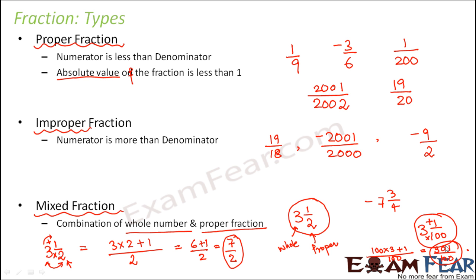Why can a mixed fraction only be expressed as an improper fraction? In a mixed fraction, one part is already a proper fraction. But the moment you multiply it with a whole number, the overall value increases. The denominator remains the same, while in the numerator we multiply by a whole number and then add something, increasing its value. Whenever the numerator is larger, it is an improper fraction — therefore a mixed fraction always gives rise to an improper fraction.